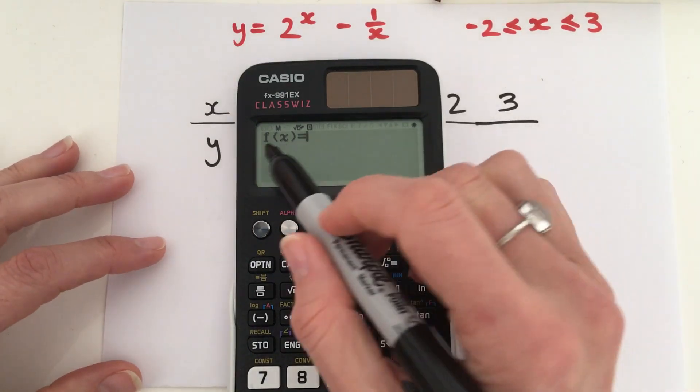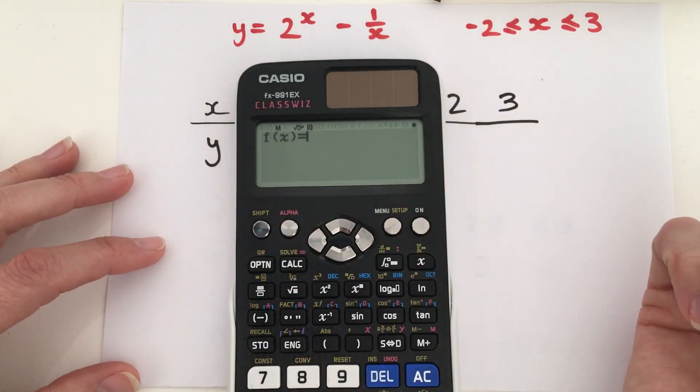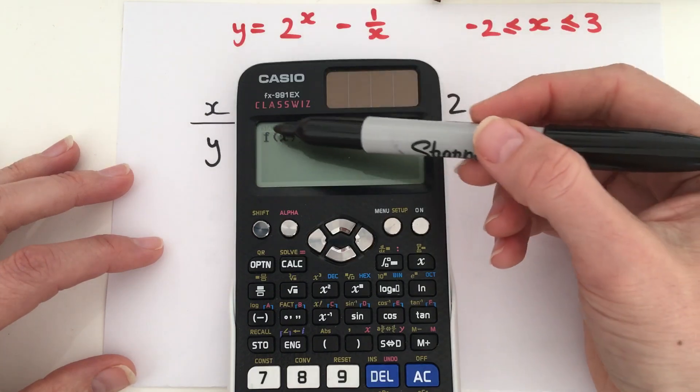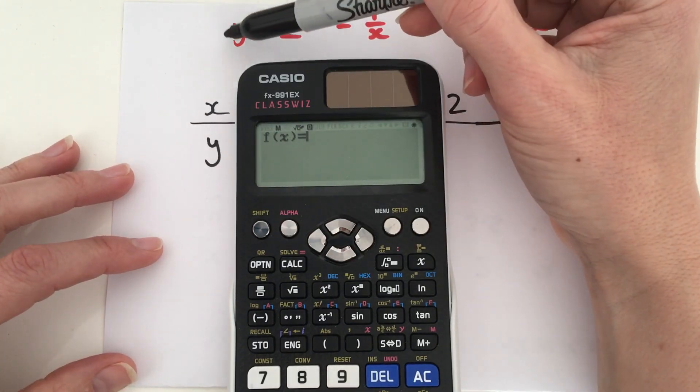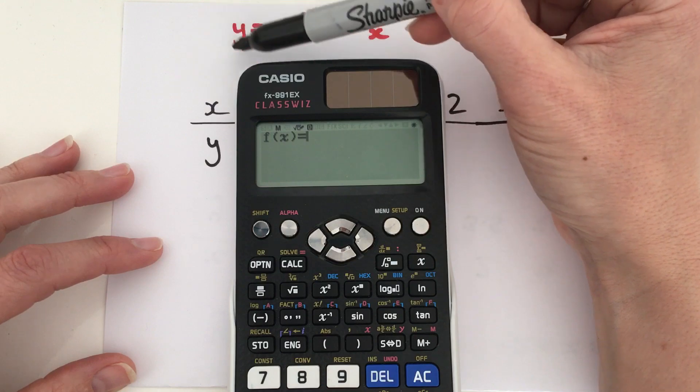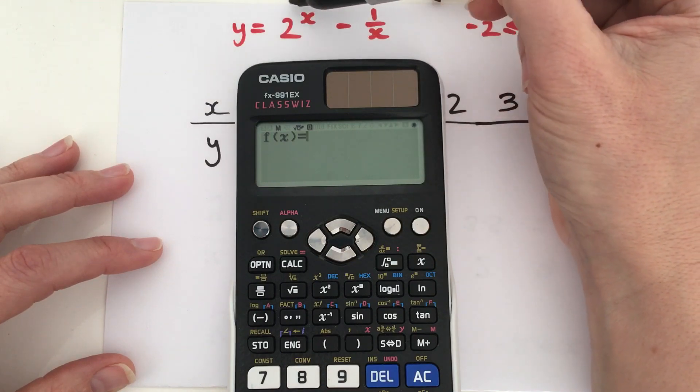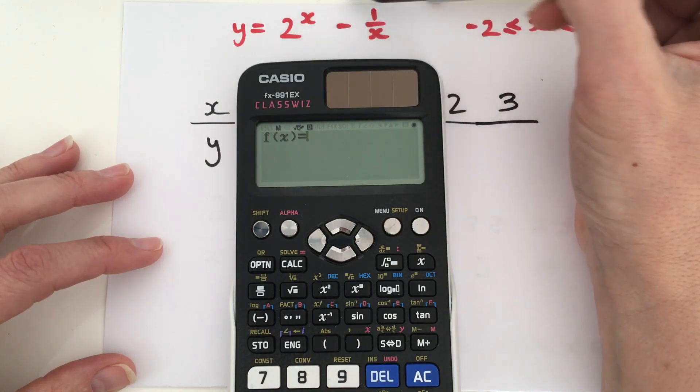Once you get there, we have f of x equals on the screen, and that is just, that's what we call a function, and that is basically a replacement of the y equals here. So we're just going to go ahead and we're going to input the rest of the equation.